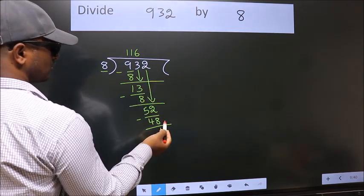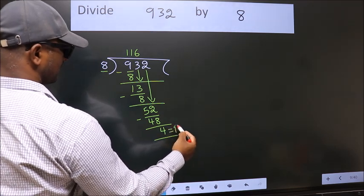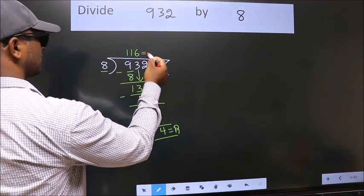No more numbers to bring it down. So we stop here. This is our remainder. This is our quotient.